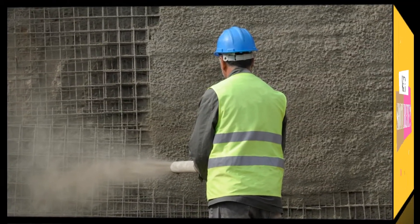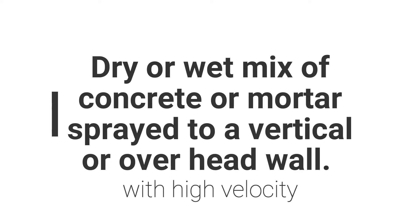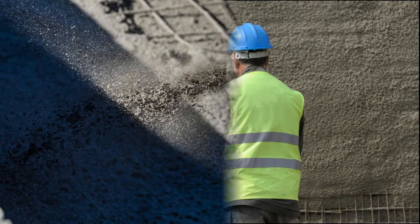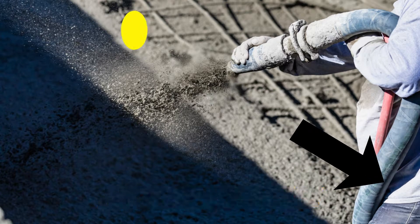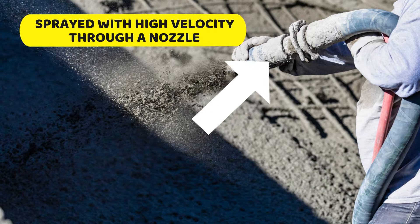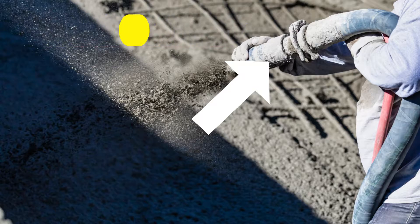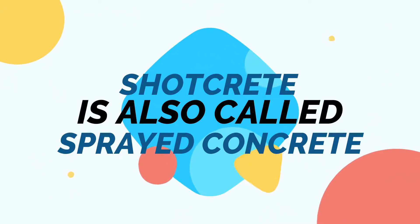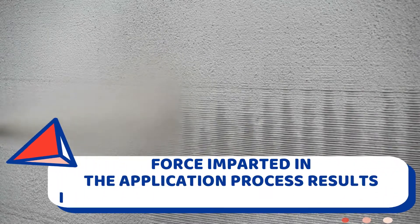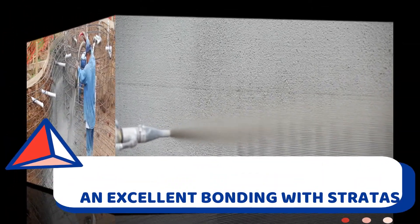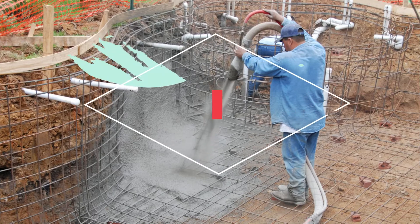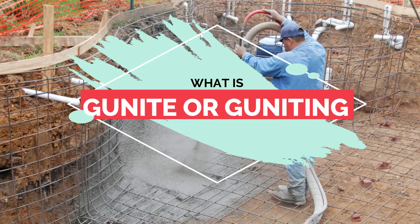Shotcrete is a dry or wet mix of concrete or mortar sprayed to a vertical or overhead wall. The concrete is conveyed through a hose and sprayed with high velocity through a nozzle. Shotcrete is also called sprayed concrete. The force imparted in the application process results in the adhesion to the strata.